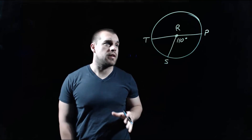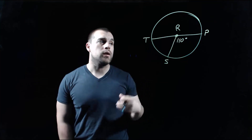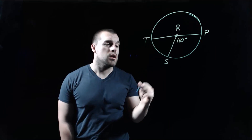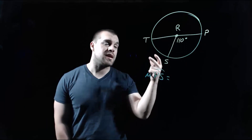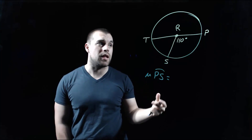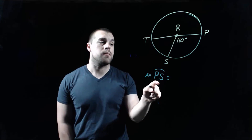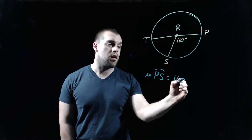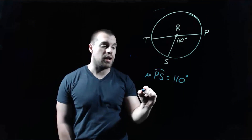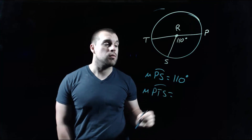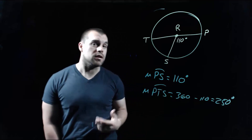In this example, we're given a picture where PT is a diameter of our circle since it goes through the center point R. We want to find the measure of a few arcs. The first one is the arc from P to S. Since angle PRS is a central angle, the arc it intercepts has the same measure — so arc PS is 110 degrees. Going the other way, from P through T to S, that major arc PTS would be 360 minus 110, which is a 250-degree arc.